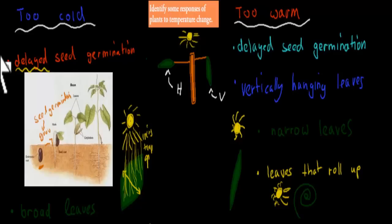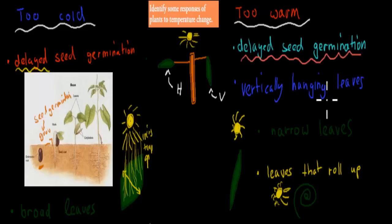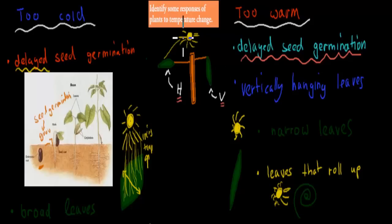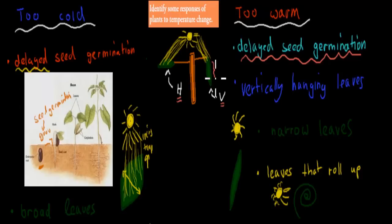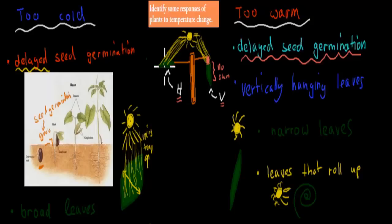When it's too warm, delayed seed germination applies for the same reason — the seed waits for optimum temperature. Plants also produce vertically hanging leaves. Compared to a horizontal leaf, which gets full sun exposure, a vertical leaf only exposes its top edge to the sun — the rest is hidden — resulting in less heat absorption. Horizontal leaves are found in colder climates; vertical leaves suit warmer conditions.